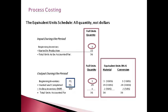Started and completed units are always 100% finished in the current period. There are two methods of process costing: Weighted Average and FIFO. Weighted Average assumes that all beginning inventory was completed during the current period and always uses 100% for the beginning inventory equivalent units. FIFO uses the percent of the work that was done only during the current period. We will discuss the two methods further in a few minutes.